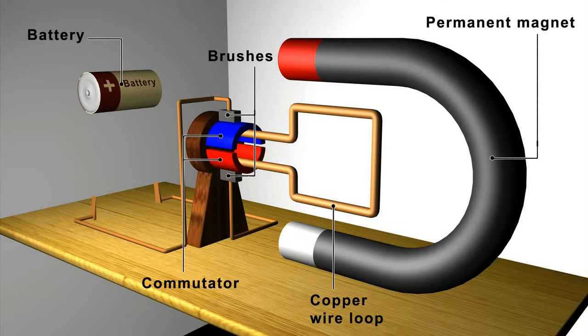We can see the battery, the commutator, the brushes, the copper wire loop, and the permanent magnet.